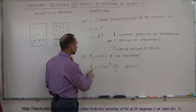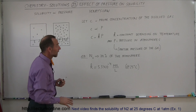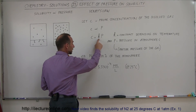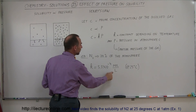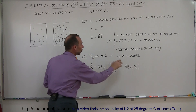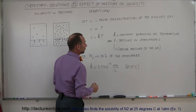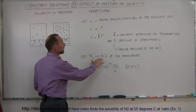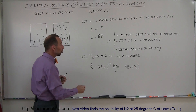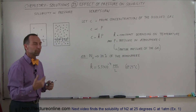For nitrogen, K is 5.3 × 10⁻⁴ mol/L per atmosphere. That means if there's one atmosphere of partial pressure of nitrogen, then 5.3 × 10⁻⁴ moles per liter will be dissolved in the solution at 25 degrees Celsius. Of course, in Earth's atmosphere nitrogen is only 78%, so the amount of nitrogen dissolved in the solution would be only 78% of that value at 25 degrees. We have to adjust for the partial pressure of the gas.